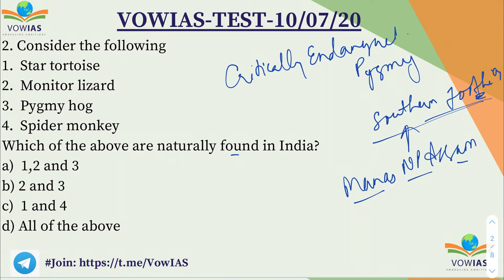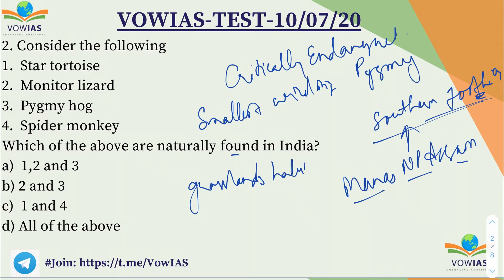The pygmy hog is the world's smallest wild pig. It is also an indicator of the management status of grassland habitats — if grasslands are degraded or in stress conditions, the pygmy hog cannot survive there. In 1996, a captive breeding program was started in Assam.